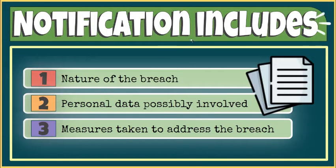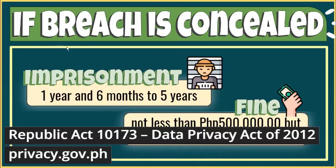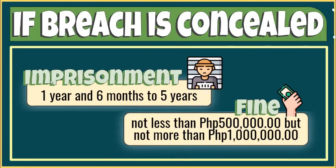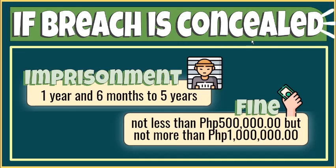The notification shall include but not be limited to: nature of the breach, personal data possibly involved, and measures taken to address the breach. If concealment of security breaches involving sensitive personal information is found, the penalty of imprisonment of one year and six months to five years, and a fine of not less than 500,000 pesos but not more than 1 million pesos, shall be imposed on persons who, after having knowledge of a security breach and of the obligation to notify the commission, intentionally or by omission conceal the fact of such security breach.